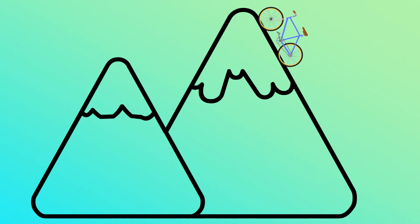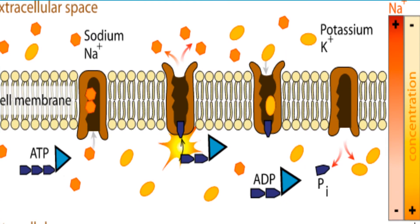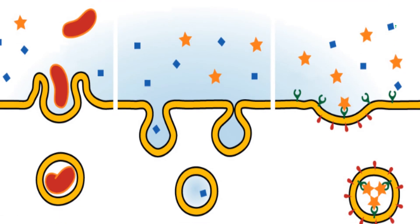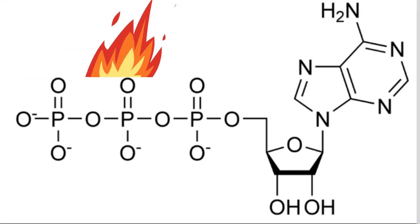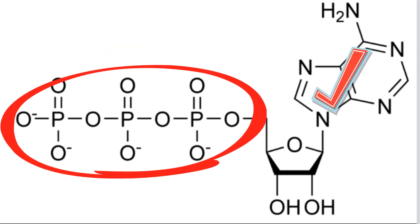Let's see why active transport requires energy. Sometimes the cell needs to move objects from a low concentration to a high concentration, or up the concentration gradient. Or an object may be too large to pass through a membrane. In these instances, active transport is used, and this requires energy. The energy for active transport is supplied by the energy molecule ATP, adenosine triphosphate.